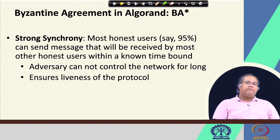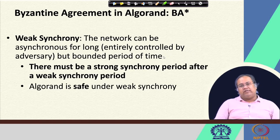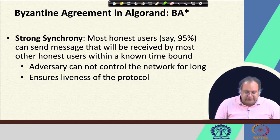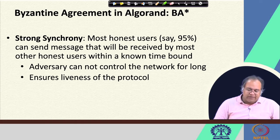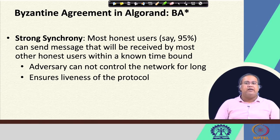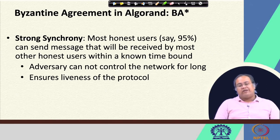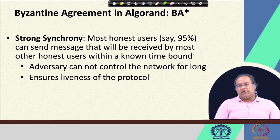Before going into the two phases, Algorand makes two different assumptions. The first is called strong synchrony: most honest users, say 95 percent, can send messages that will be received by most other honest users within a known time bound. The strong synchrony assumption basically tells you that an adversary cannot control the network for long, because all honest users are able to share messages with each other within the time limit — you cannot create a partition in the network.